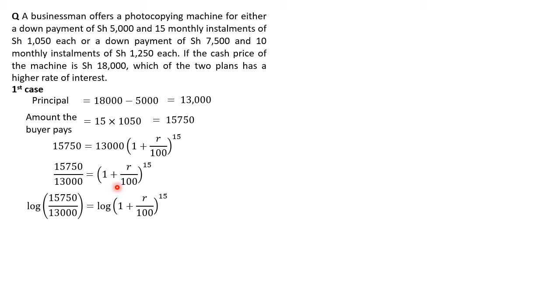We take logarithms of both sides, so we have the logarithm of the fraction before the equal sign, and then the logarithm of everything after the equal sign, that is log of 1 plus R over 100, raised to the power of 15. We bring the 15 before the logarithm, so we have 15 log of 1 plus R over 100. Divide both sides by 15.